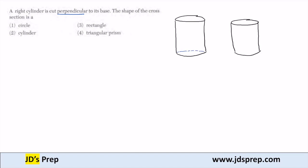here's my base on the bottom. If I want it to be perpendicular, then I want it to be connecting at a right angle. So I want my cross section to cut perpendicular to the base, like that.